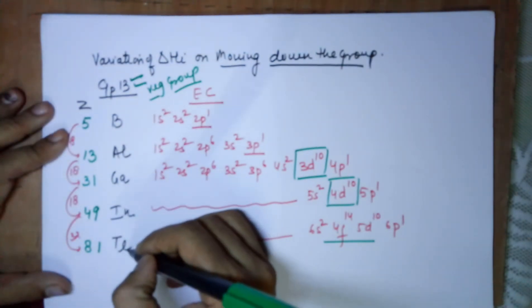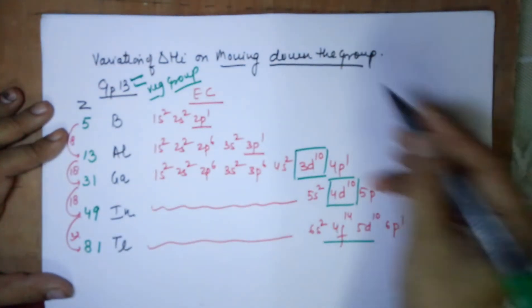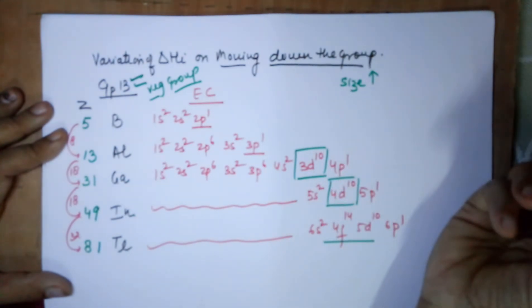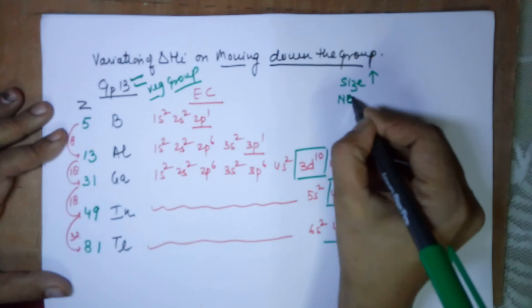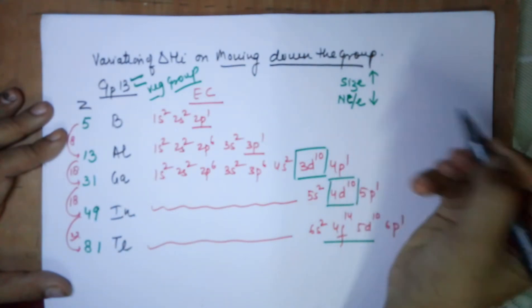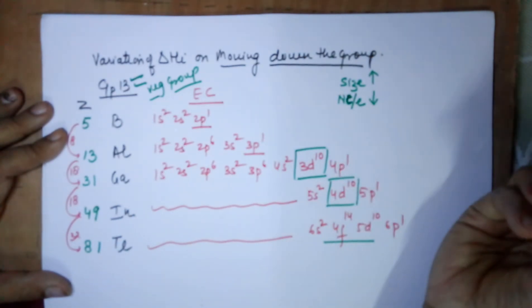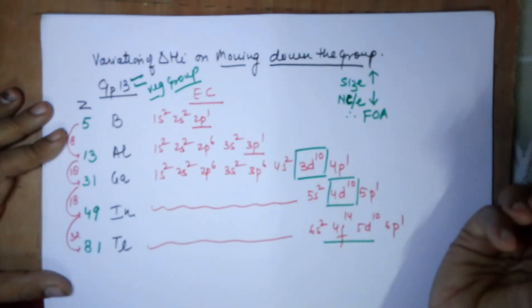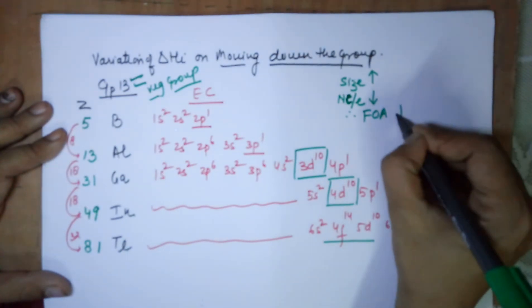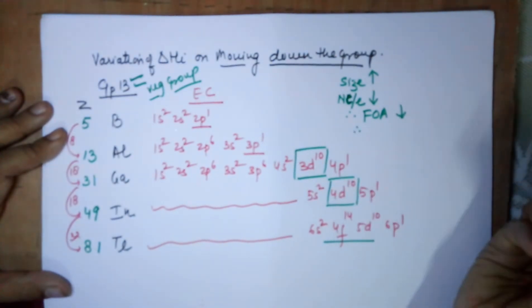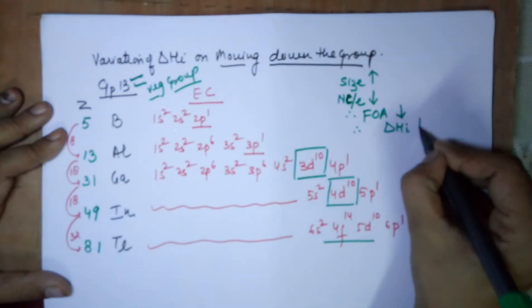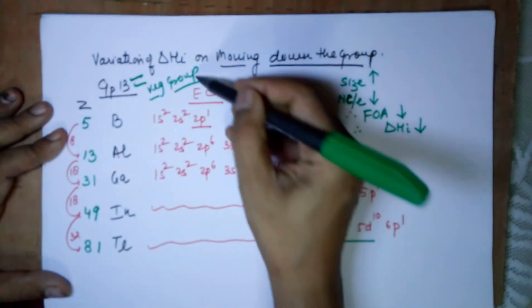Now down the group, the size increases. Since the size increases, nuclear charge per electron decreases. If the nuclear charge felt per electron is decreasing, therefore the force of attraction that the electron feels towards the nucleus is decreasing. Therefore, energy required to remove the electron should decrease.